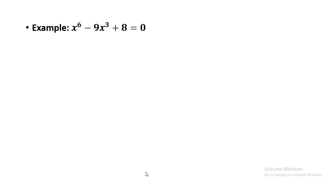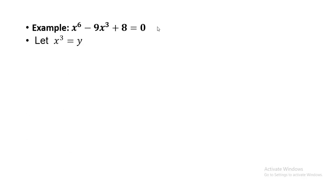Now let us move to another example to understand our concepts better. If the power of the second term is N, then the first term's power will be twice of N. Here the power is 3, so the first variable has power 2 times 3, which is 6. The equation is X⁶ minus 9X³ plus 8 equals to 0. This is a 6th order equation. I have supposed X³ = Y and named it as equation A.